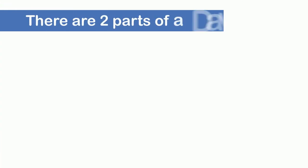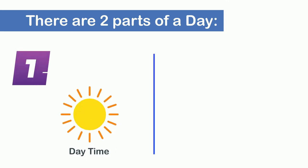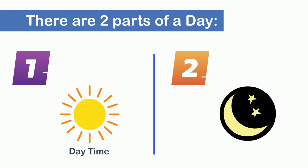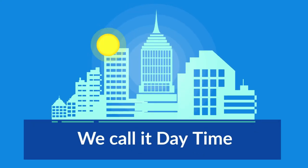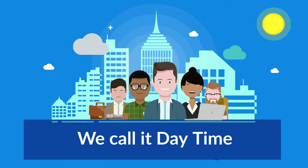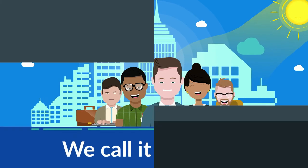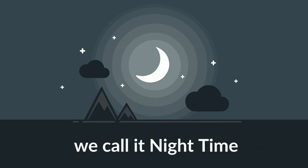There are two parts of a day. One is called day time and the other is called night time. We call it day time when the sun rises and stays in the sky giving us light. When the sun sets, it becomes dark and we call it night time.